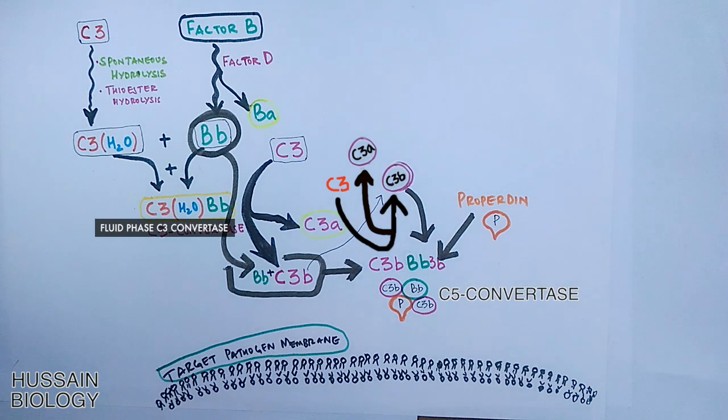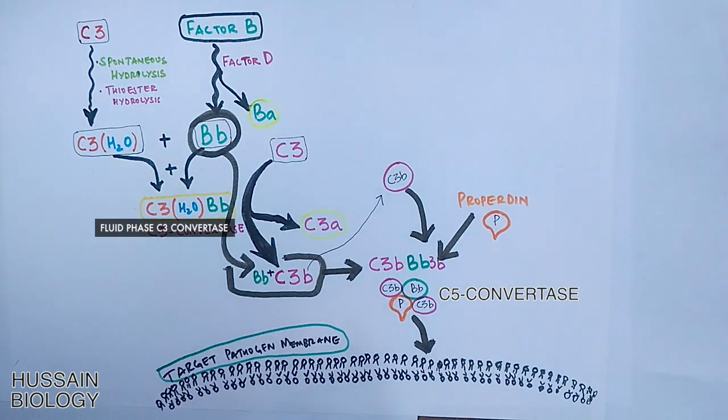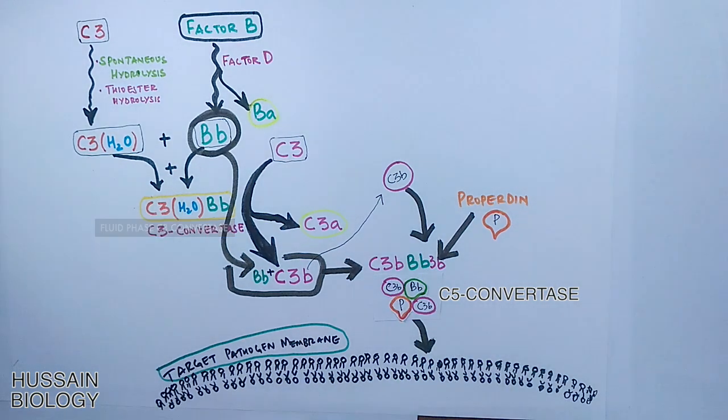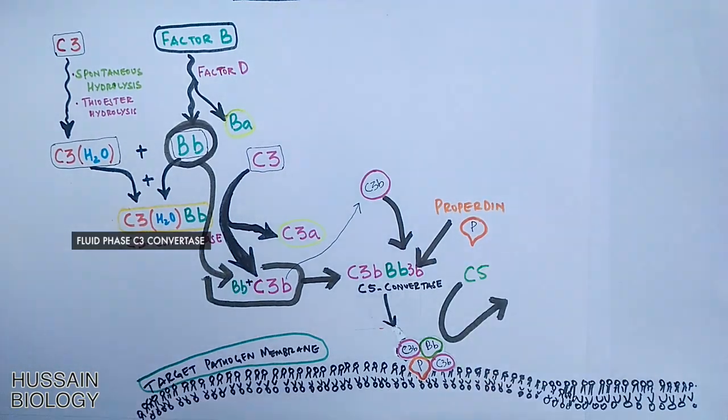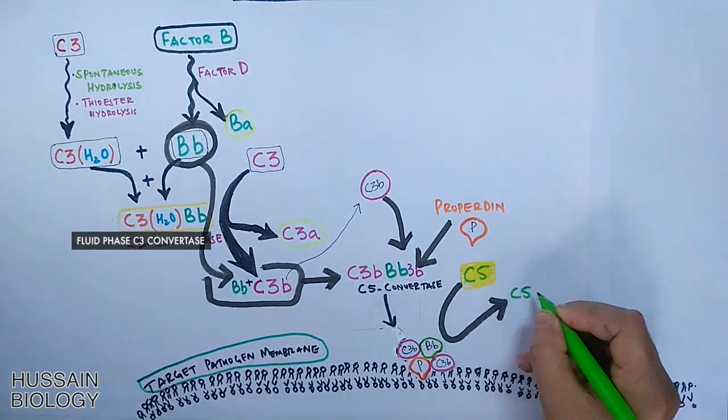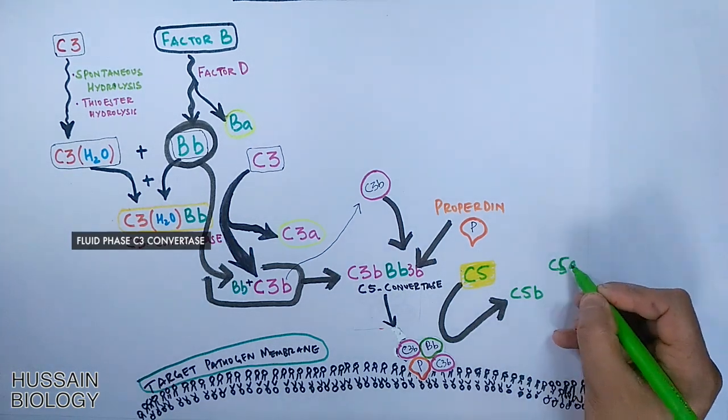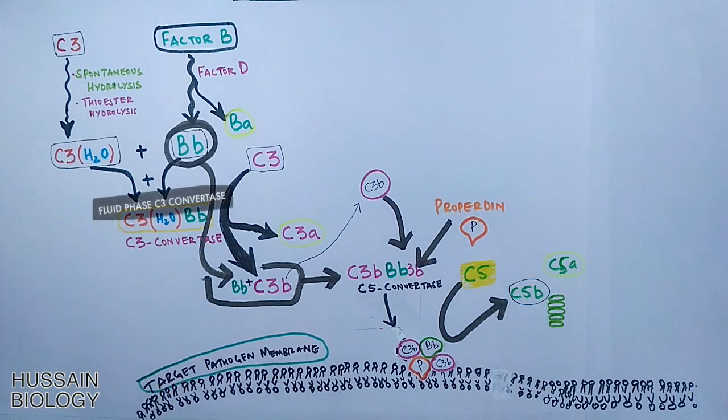Now from here, this C5 convertase gets into the target membrane and from here it acts upon C5 protein and converts it into C5b and C5a. This C5b gets into the target membrane as shown in the figure.